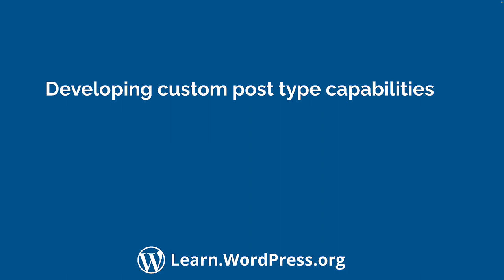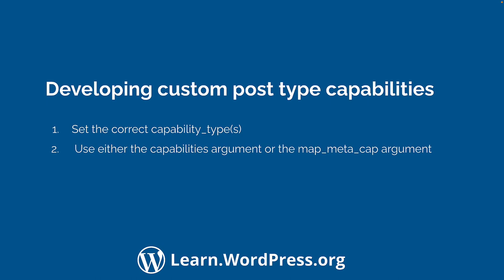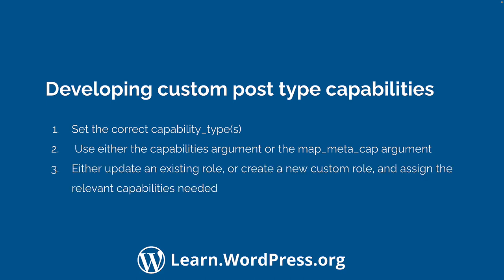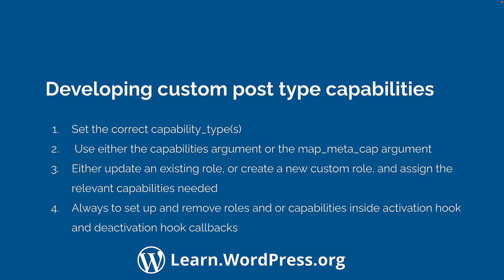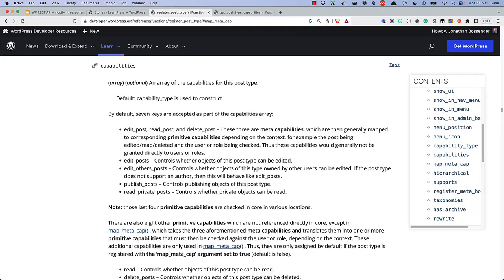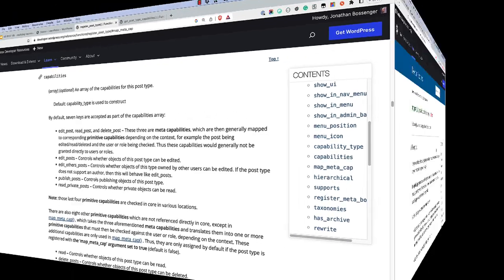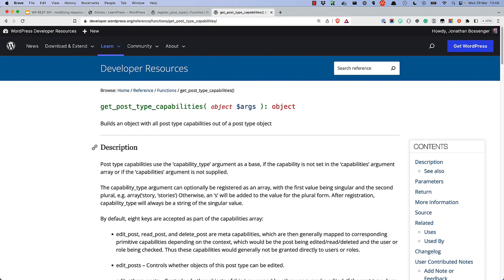Your specific requirements will determine how you set your capabilities for your custom post types. Perhaps you don't need the administrator role to access stories - then you could just manually set the additional capabilities you need and not use the map_meta_cap argument. Either way, whatever capabilities you configure will only be applied once you add them to a role. Generally, your process for setting up custom post type capabilities will be to set the correct capability_type or types, then use either the capabilities argument or the map_meta_cap argument to set up any additional capabilities you require, and then either update an existing role or create a new custom role and assign the relevant capabilities needed. Always remember to set up roles and capabilities inside an activation hook callback function and remove them inside a deactivation hook callback function. You can read up on how capabilities can be mapped on custom post types in the parameter detail information section of the registerPostType documentation in the WordPress developer handbook, as well as the function reference entry on the getPostTypeCapabilities function. Happy coding!